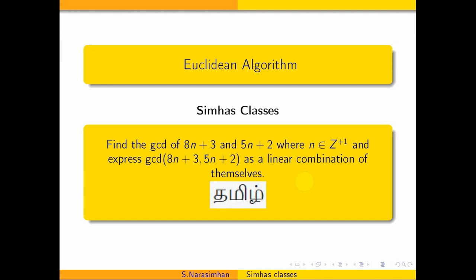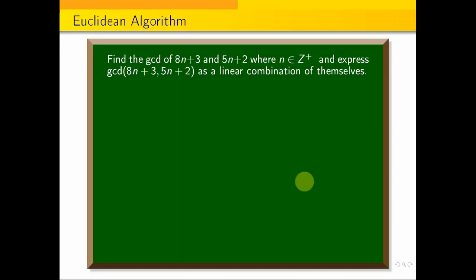Hi students, welcome to Sigma's classes. Here, GCD as a linear combination is a good example of the sum. Find the GCD of 8n plus 3 and 5n plus 2, where n belongs to Z plus, and express GCD of 8n plus 3 and 5n plus 2 as a linear combination of themselves. This is the problem.